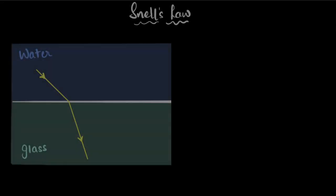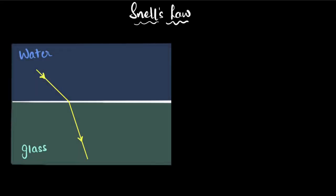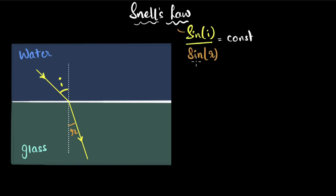Let's summarize the ideas of refraction, Snell's law, and refractive index. When light goes from one medium to another — like from water to glass — it bends, and this bending follows a rule. We drop a normal, define the angle of incidence and the angle of refraction, and then Snell's law states that sine of the angle of incidence divided by sine of the angle of refraction is a constant. This constant depends upon the two media.